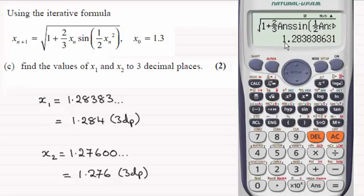All we need to do now is press equals again, and this gives us the next approximation x₂ = 1.27600..., which to three decimal places is 1.276. So there you go, that's the quick way of doing it on your calculator.